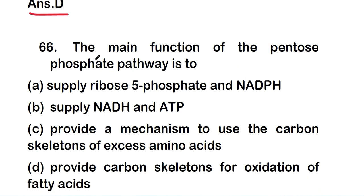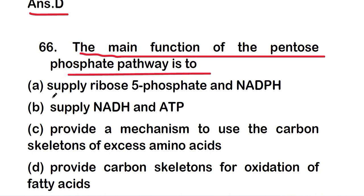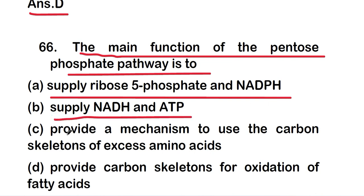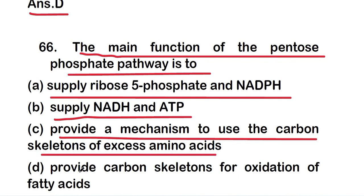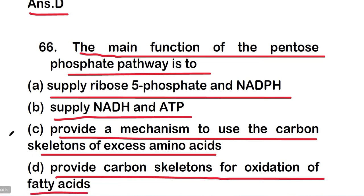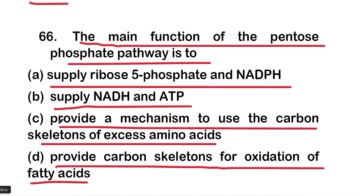Question 66: the main function of the pentose phosphate pathway is to — option A, supply ribose 5-phosphate and NADPH; option B, supply NADH and ATP; option C, provide a mechanism to use the carbon skeleton of excess amino acids; or option D, provide carbon skeletons for oxidation of fatty acids. The right answer is option A — supply ribose 5-phosphate and NADPH.